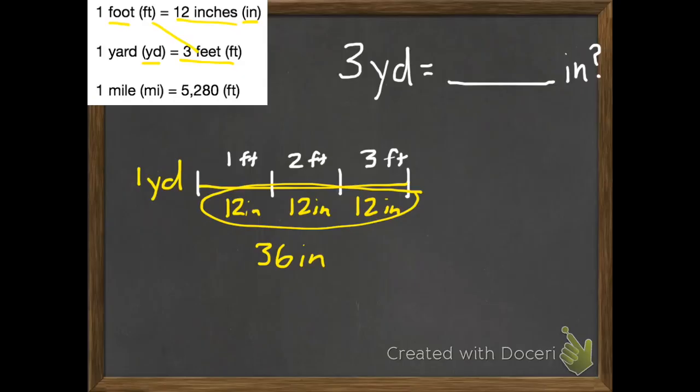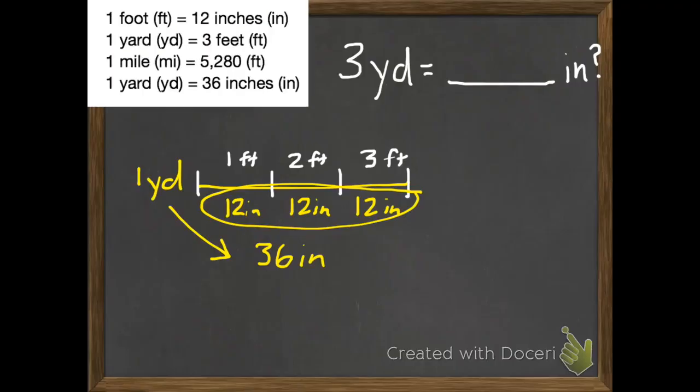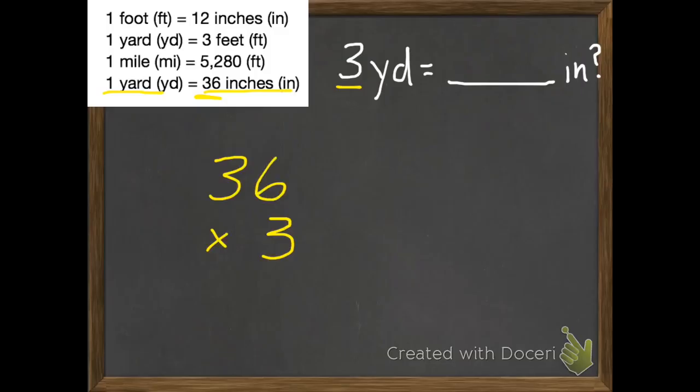Now we've created a new fact. One yard equals 36 inches. So I'm going to add this fact to our little box in the top corner. There it is at the bottom. One yard equals 36 inches. Now that we know this, we can figure out our problem.